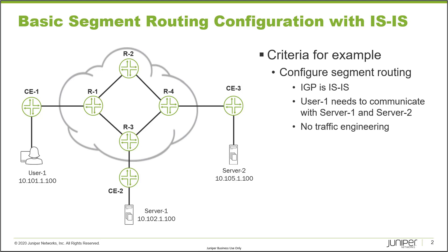We have three different sites that we want to configure segment routing for, to support an L3 VPN between all three sites within the same VPN. The IGP is ISIS, and User 1 needs to communicate with Server 1 and Server 2. We are not using any traffic engineering — this is basic shortest path segment routing.